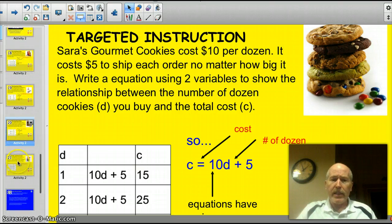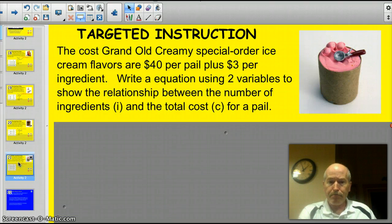Let's have you try a similar example before I give you your ticket to the show. The Grand Ole Creamy Special Order Ice Cream Flavors are $40 per pail plus $3 per ingredient. Write an equation using two variables to show the relationship between the number of ingredients, I, and the cost, and the total cost, C, for a pail. Go ahead and pause the video.